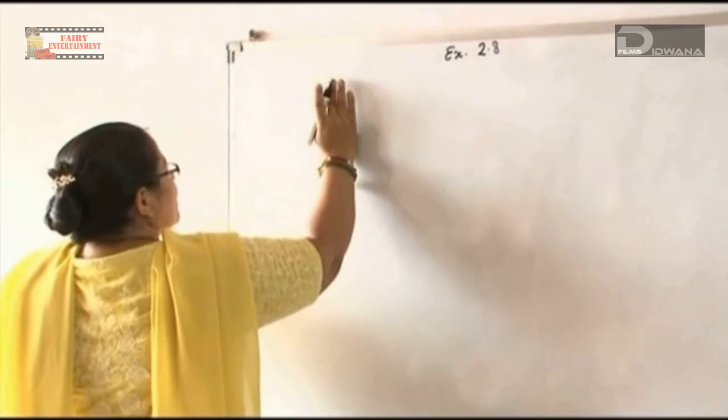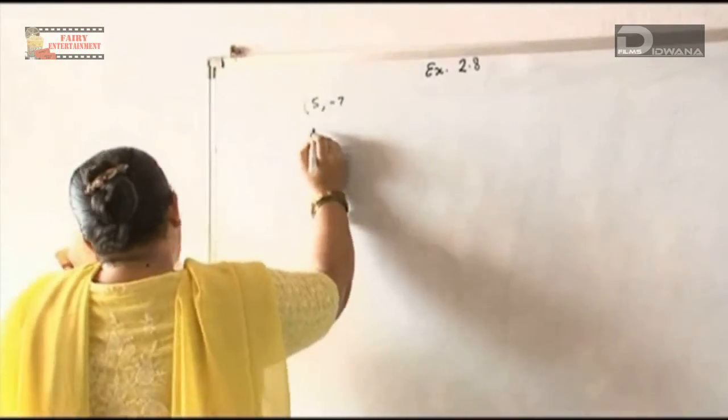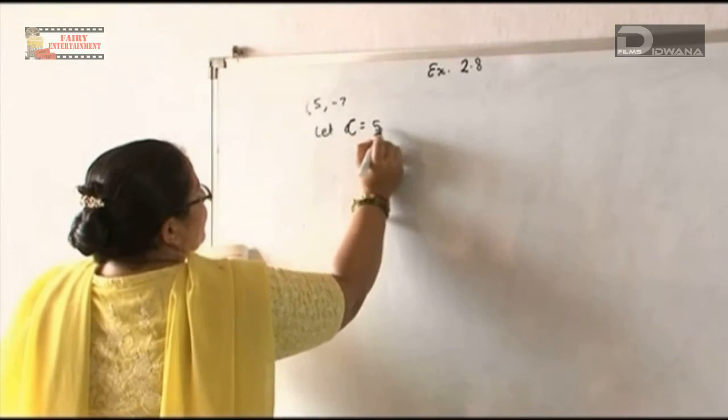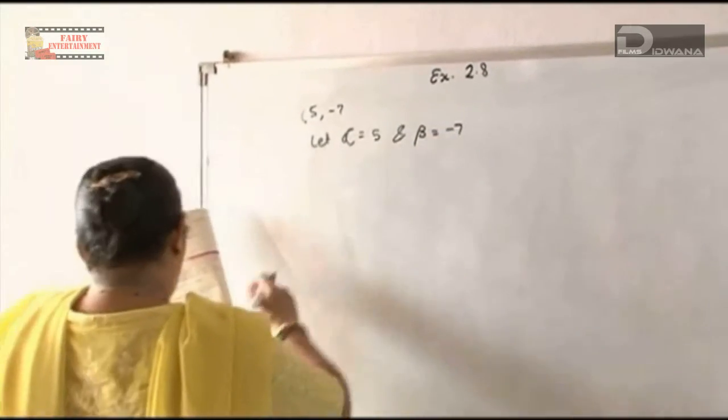Let the roots be 5 and minus 7. Therefore, let α = 5 and β = -7.